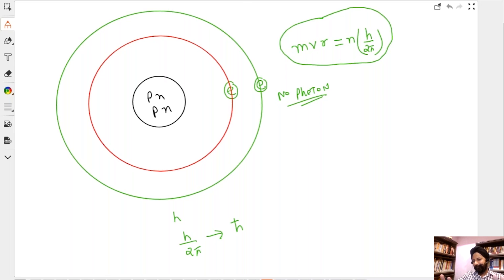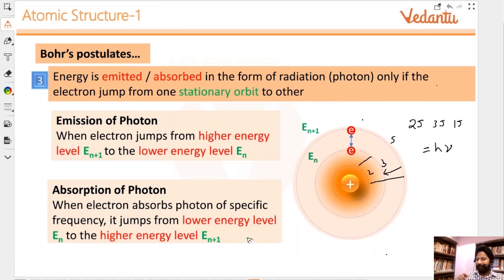For now you have to trust Bohr and say okay I agree with you on these three things, and this is how the model of the atom is going to be. So electron will be either here or here.